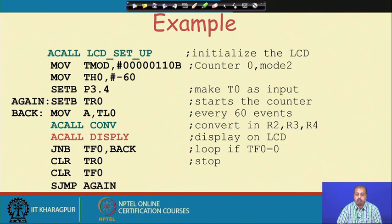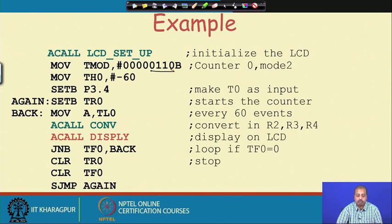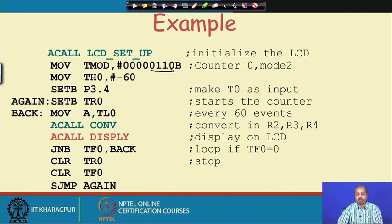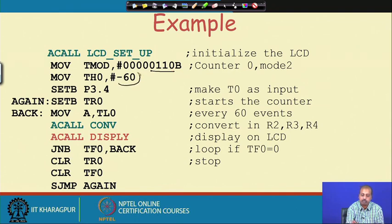We initialize counter 0 in mode 2 — the lower order 4 bits tell the mode setting, so it is a counter in mode 2. TH0 is initialized to minus 60, and we set bit P3.4. This makes T0 an input, just like in the previous example we used set bit P3.5. Then set bit TR0 starts the timer — actually the counter — and we move TL0 to A. After every 60 such events, the timer will overflow.